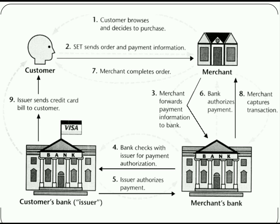In step 2, SET sends order information (OI) and payment information (PI) to the merchant. In step 3, the merchant forwards the payment information to the bank, while keeping the OI for himself. In step 4, the bank checks with the issuer for payment authorization — verifying credit card details such as expiry, validity, and credit balance. If everything is okay, in step 5 the issuer issues authorization to the merchant's bank, and in step 6 the bank authorizes the payment. In step 7, the merchant completes the order with the customer, and in step 8 the merchant captures the transaction.